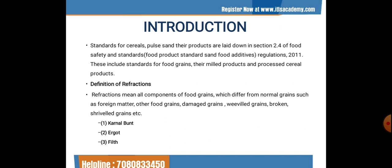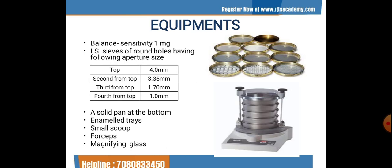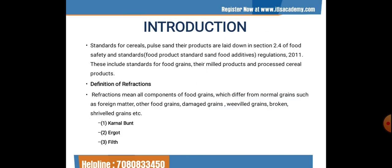The definition for various refractions is given under types such as kernel bunt, ergot, and filth. Kernel bunt refers to grains of wheat having a dull appearance and blackish in color. The blackness spreads along the longitudinal furrow on the ventral side, giving the kernels a boat-like appearance. This grain is affected by a field fungus.